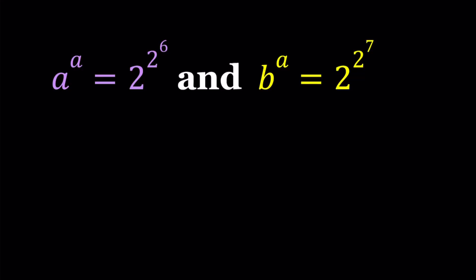We have a^a = 2^(2^6) and b^a = 2^(2^7). We're going to be solving for a and b values. So I'll be presenting two methods, and let's start with the first one.